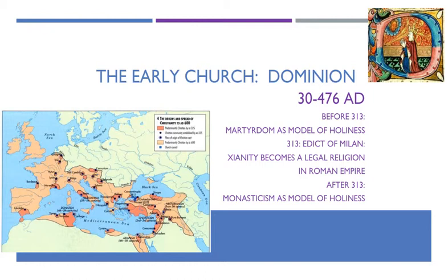Early Church Dominion. There's Emperor Constantine in the upper right, and he is the guy who changed the course of Christian history in 313. You don't have to know very many dates for this church history class — 313 is one of them. Know it. Know what the Edict of Milan was, and know that it was issued by Emperor Constantine. So prior to 313, Christianity is a minority religion — look at your map to see those pockets of dark peach areas, the parts of the empire where Christians were the majority of the population.